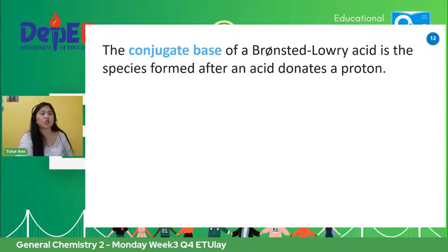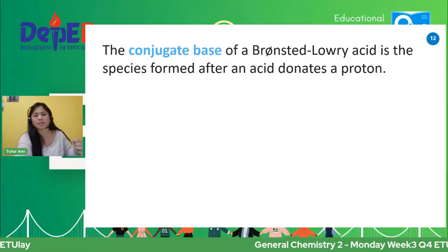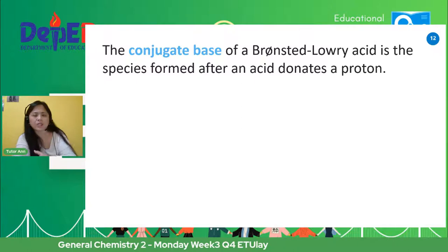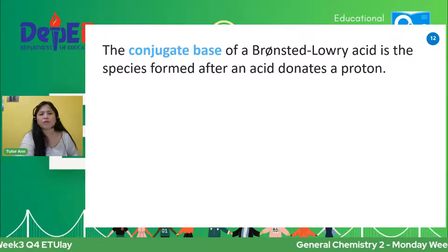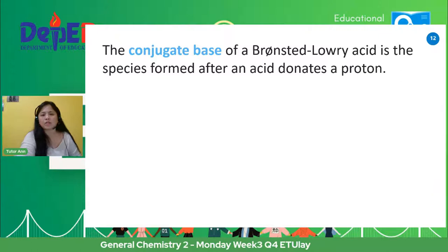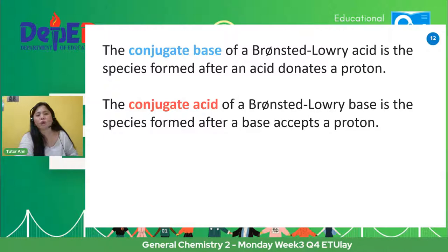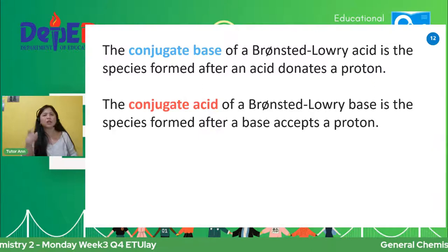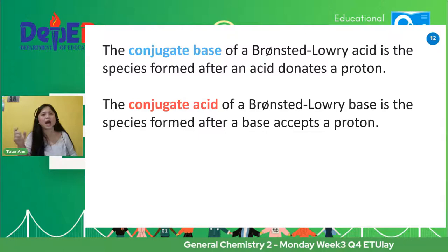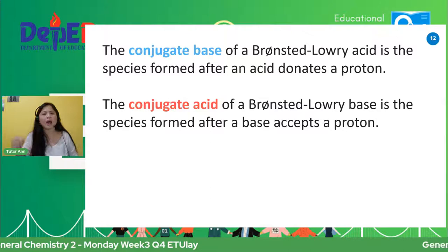The conjugate base of a Bronsted-Lowry Acid — pag sinabi natin conjugate, this is related to the first one. Yung conjugate base ng Bronsted-Lowry Acid is the species formed after an acid donates a proton. While the conjugate acid of a Bronsted-Lowry Base is the species formed after a base accepts a proton. So yung after ni Bronsted-Lowry Acid mag-donate, yun ang kanyang magiging conjugate base. And then yung conjugate acid, after niya mag-accept ng proton.